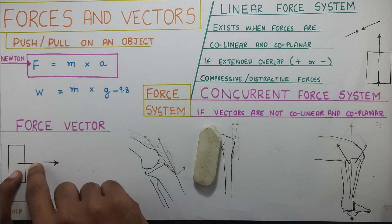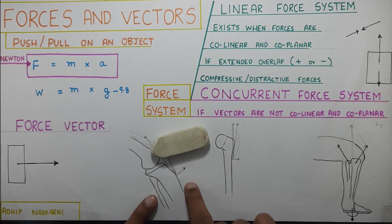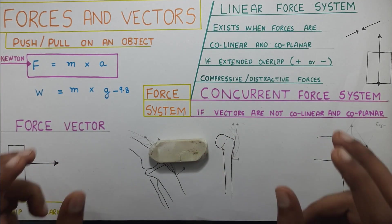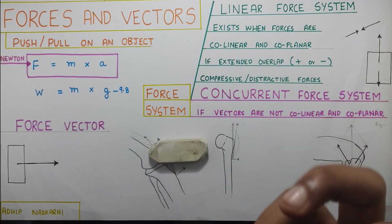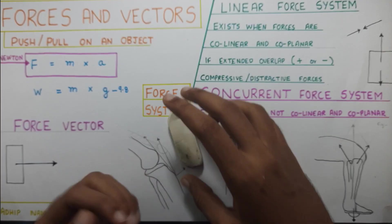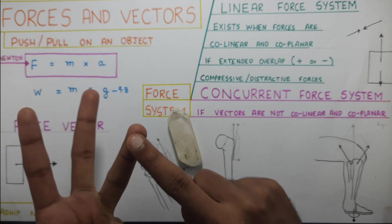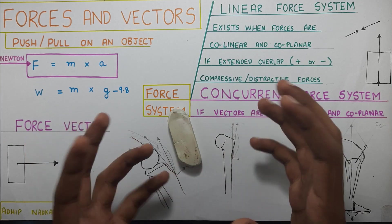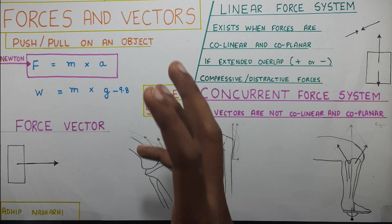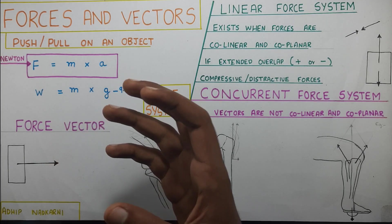Now, when I'm pushing an object, how do we know exactly where the force is being applied? This is where the concept of center of mass, or center of gravity when talking about gravity, comes into play. I will cover center of mass, COM, COG, line of gravity, base of support, and stability in a future video. For now, just keep in mind that center of mass is where the force is normally applied on an object.